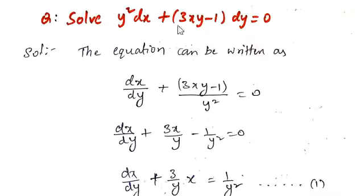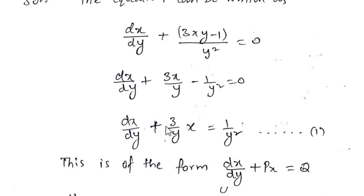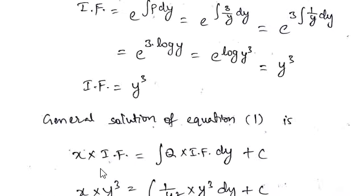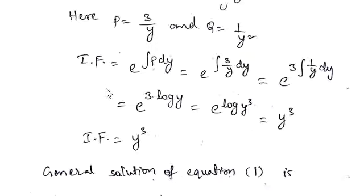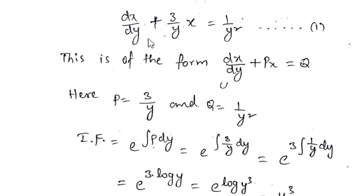This is equation number 1. We write the equation in this form because it is comparable with the standard form of a linear differential equation: dx/dy + Px = Q, with general solution x·(IF) = ∫Q·(IF) dy + c. Comparing, P = 3/y and Q = 1/y².